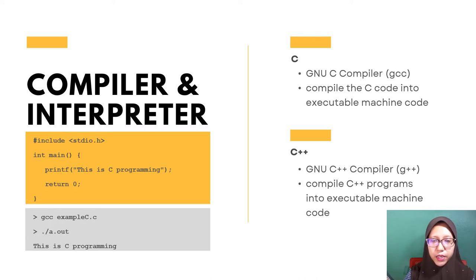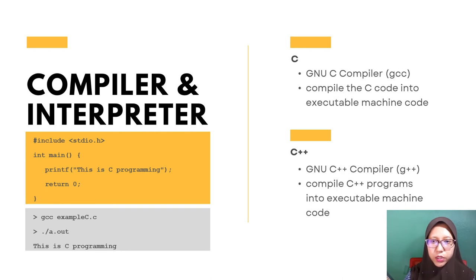Programming languages such as C and C++ use compilers. GCC is used to compile C language, which will compile the C code into an executable machine code before the program is run. G++, the C++ compiler, is a compiler in Linux which is used to compile C++ programs into executable machine code.